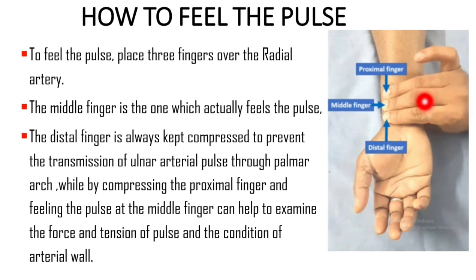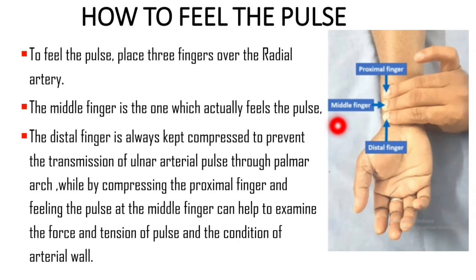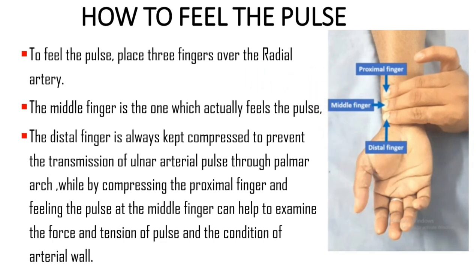The finger situated distally, in the distal part of the forearm, is called the distal finger. The finger situated between the proximal and distal finger is called the middle finger. In the lateral aspect over the distal part of the forearm, the radial artery passes superficially over the surface of the radius bone. That is where we are placing the fingers to feel the pulse — three fingers over the radial artery.